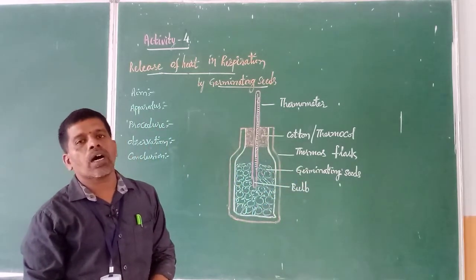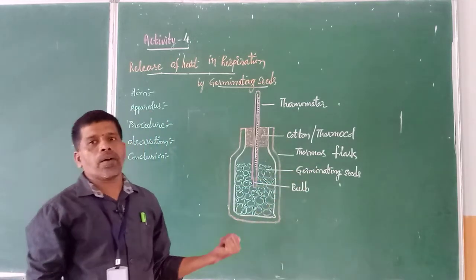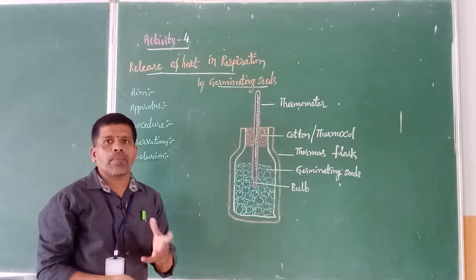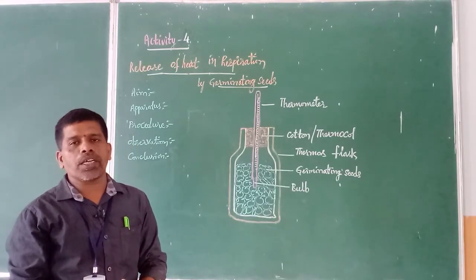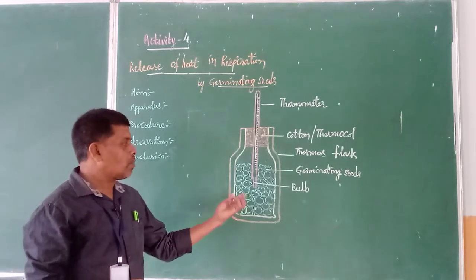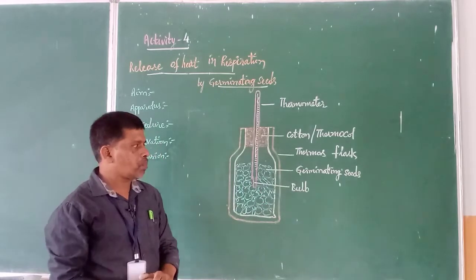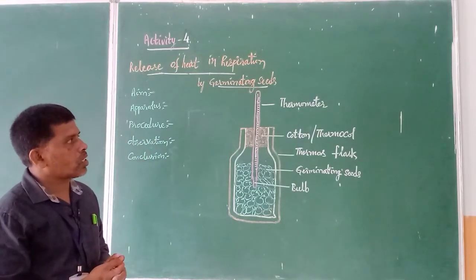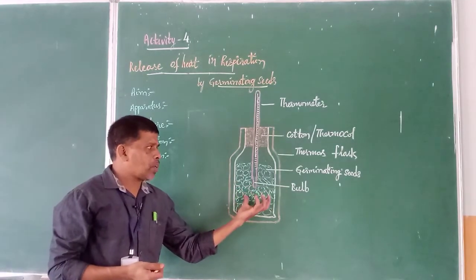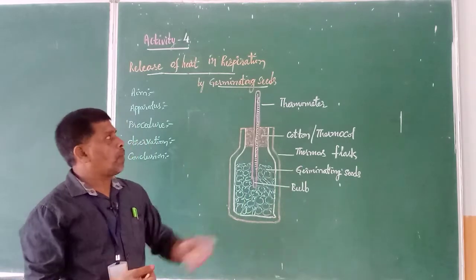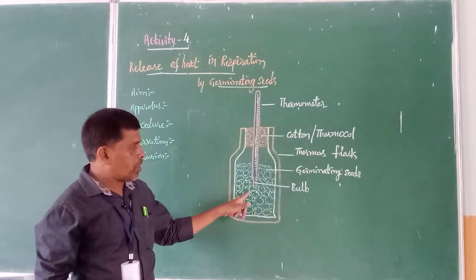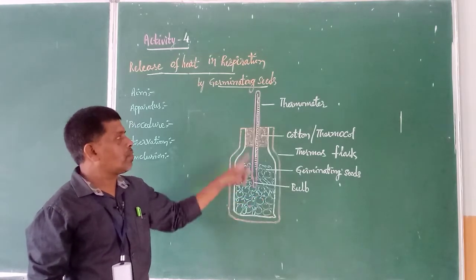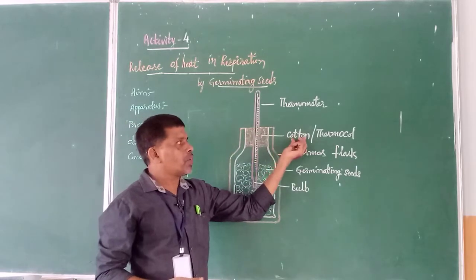Next we need germinating seeds or sprouted seeds. To prepare them: take a few seeds, soak them in water in a bowl overnight, then next morning remove the water, put them into a piece of cloth, tie it tightly, and after one more day you get the germinating seeds. Take a larger number of germinating seeds for this experiment. Now for the procedure: fill the thermos flask with germinating seeds, then place a thermometer in between them, making sure the bulb of the thermometer is inserted in between the germinating seeds. Then close the thermos flask mouth using cotton or thermocole.